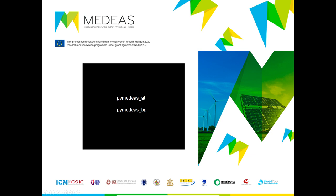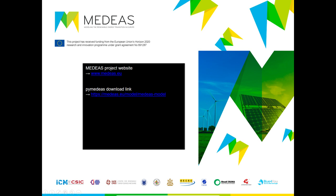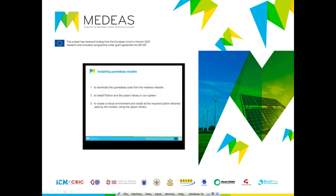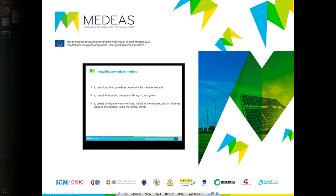The code is licensed under the MIT license and you can get it for free from two sources: the project website, which is the recommended way if you only want to use the code, or the git repository, which is the one you should consider if you want to follow the development of the code or you want to contribute. In order to get the model up and running we'll need to do three things: first, download the PyMEDEAS code from the MEDEAS website; then install Python and the PySD library in our system; and finally create a virtual environment and install all the required Python libraries used by the models using the pip package manager.